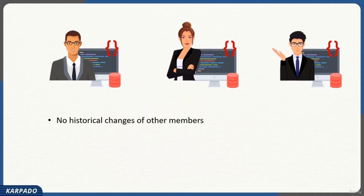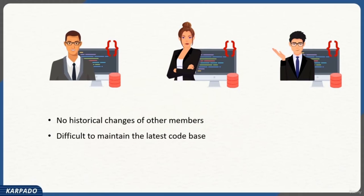This is clearly a problem — unless Isha gets access to the entire history of changes, she cannot effectively work on a task. Another problem: it's difficult to maintain the latest codebase. Whenever someone makes a change, they need to let other developers know and have them copy that code to their local machine. This is practically impossible when multiple team members work on a single codebase, and things become even more complicated if two people work on the same file.